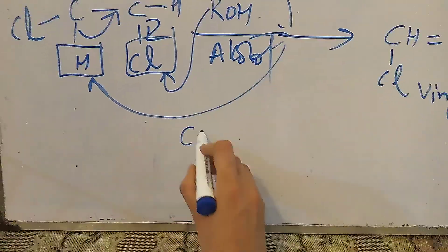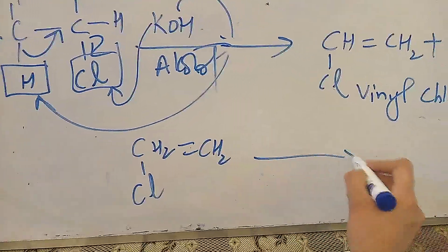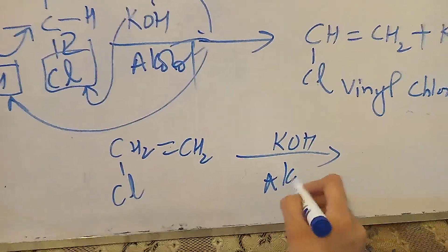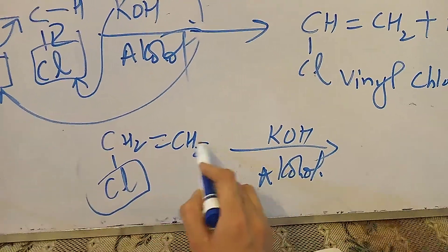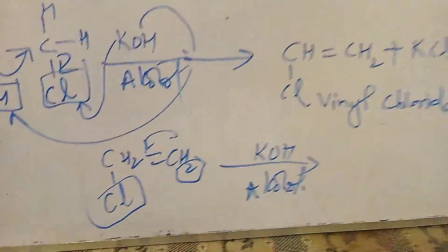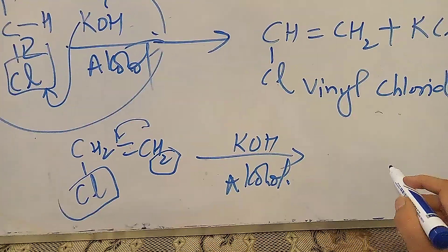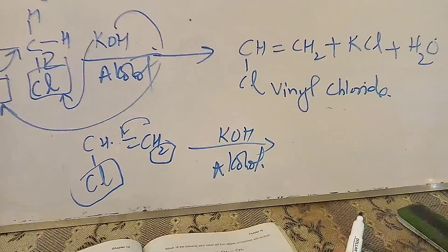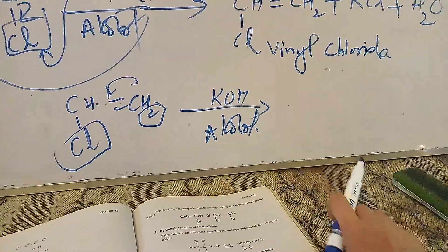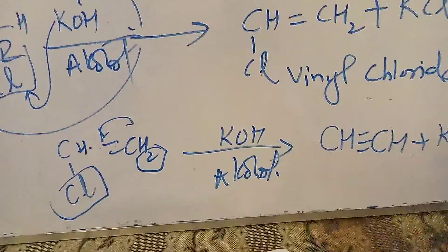So we will perform dehydrohalogenation again, in the presence of potassium hydroxide and alcohol. The halogen atom is again removed from one carbon and one hydrogen is removed from the adjacent carbon, resulting in the formation of a carbon-to-carbon triple bond.